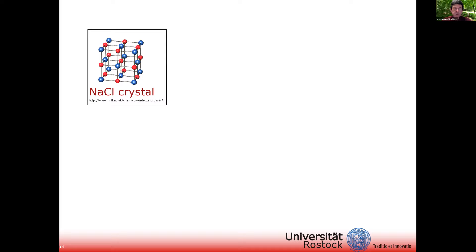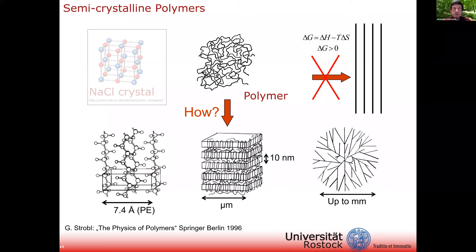A few words about crystallization in general. You all know that, for example, when sodium chloride crystallizes, the atoms are arranged on a three-dimensional lattice and we have a very uniform and highly organized structure. If a polymer wants to do the same, there are some problems. The main problem is that the ideal crystal of a polymer would consist of fully stretched chains. In order to go from the coiled structure in the melt to the fully extended chain, we would have a dramatic loss of entropy. Because of that, the change in the Gibbs free energy would be larger than zero, so this process normally does not happen, only in very few exceptional cases.